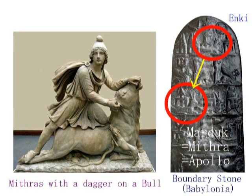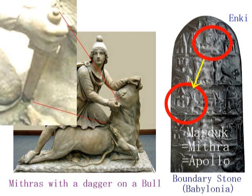なお、ミトラ＝アポロ説については別のところで証明しました。エンキ・エアからマルドゥックには正当に王位が継承されたと言われていますが、どうもそうではないようです。左のミトラ像をご覧ください。この像の中では、ミトラが牛にまたがり、牛の首に短剣を突き刺しています。